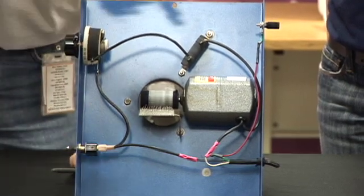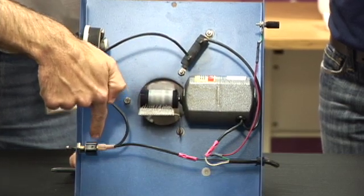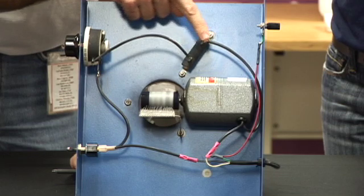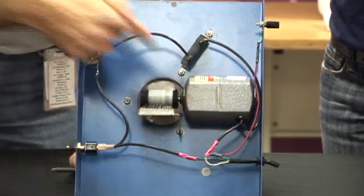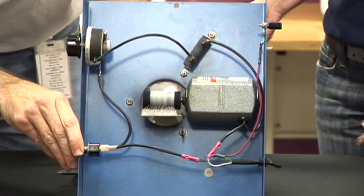The electricity comes in from the power cord, runs through the on and off switch, through the speed control, through this ballast resistor that prevents the motor from running too fast, and then back again into the wall. So when we turn the electricity on, the motor spins and it makes this belt go round and round.